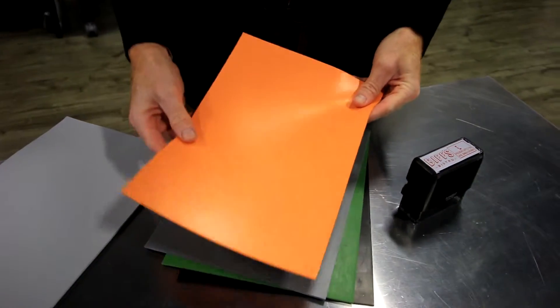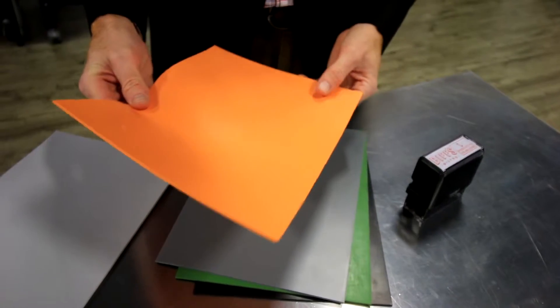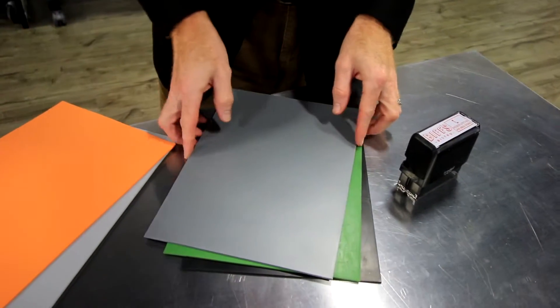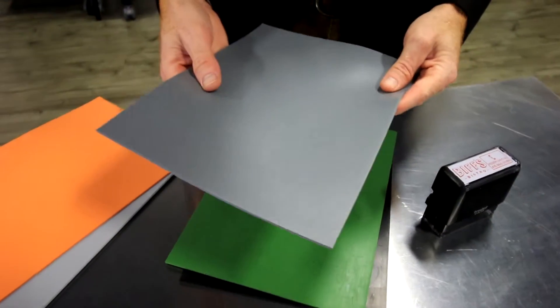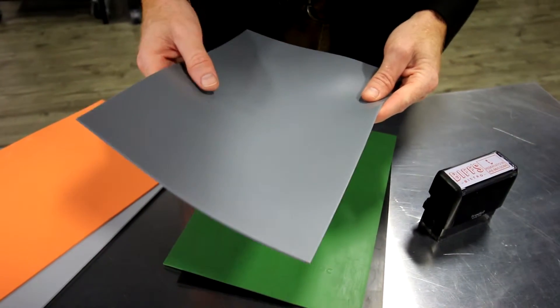The next one is our Tempo and it's 21 percent faster than our standard rubber. Next is Classico. This is the standard. Most people use this laser rubber to make stamps.